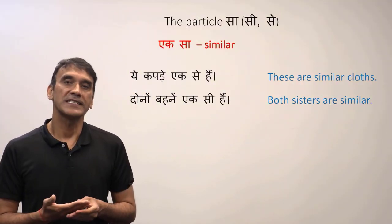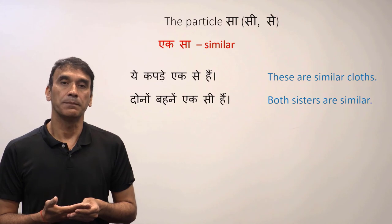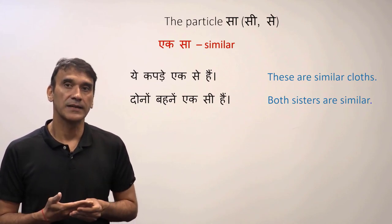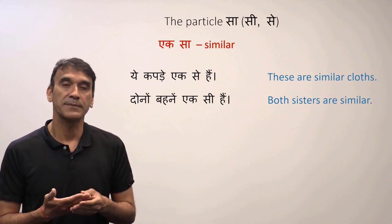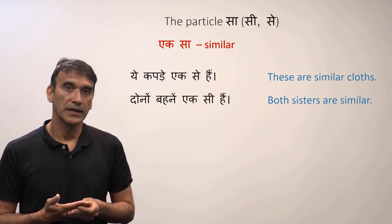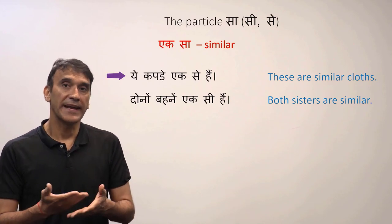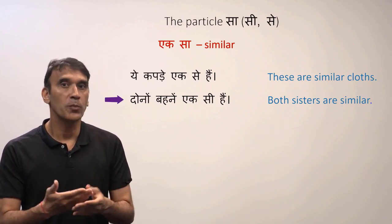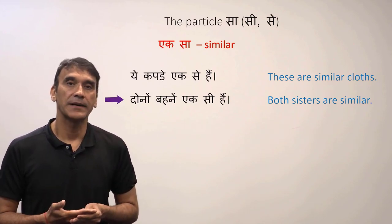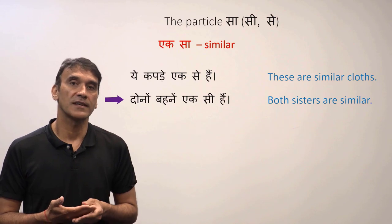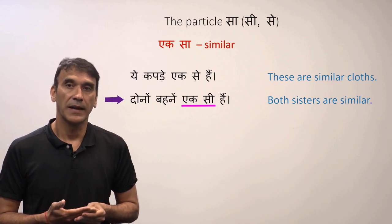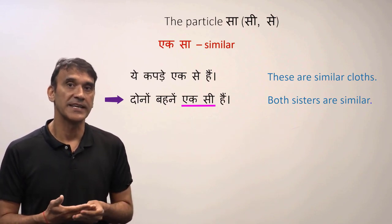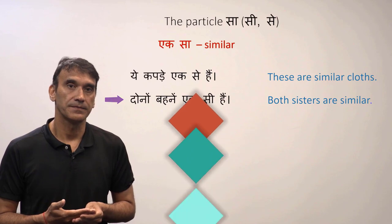There is also a phrase made with the particle 'sa': 'ek sa', which means 'similar'. 'Ye kapde ek se hain' — these clothes are similar. 'Dono behne ek si hain' — both sisters are similar. 'Behne' is feminine, so it is 'si' — 'ek si hain'.